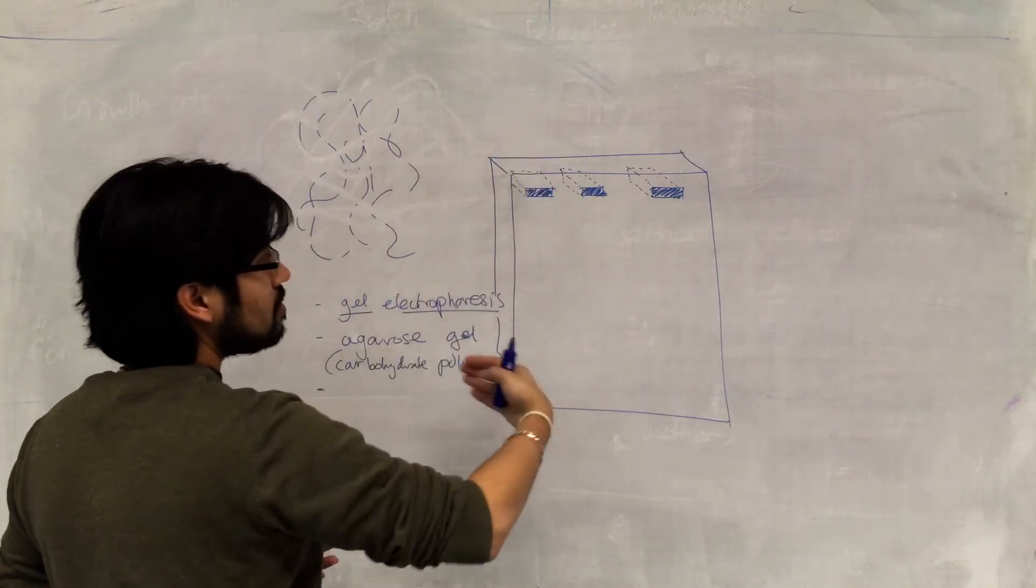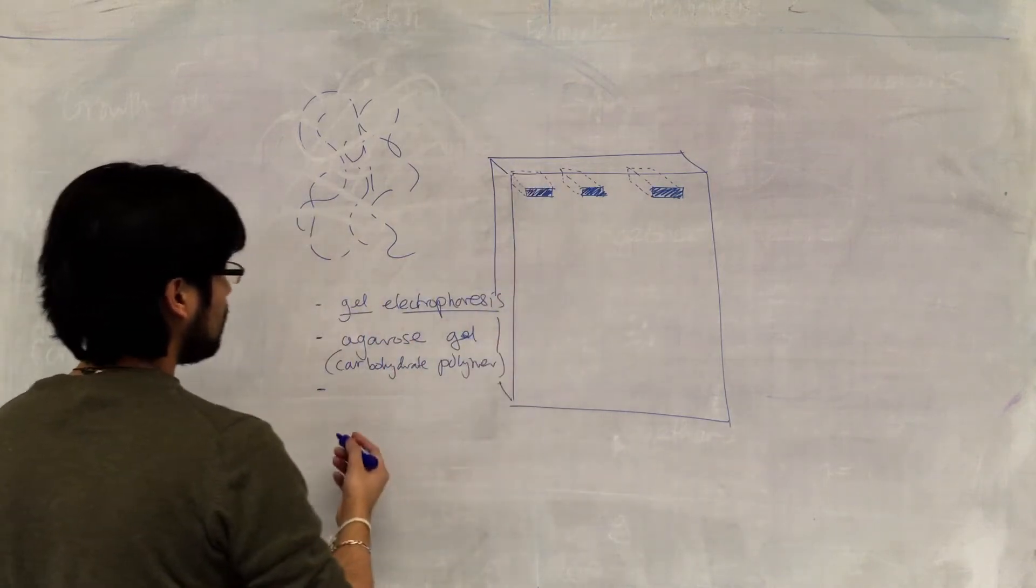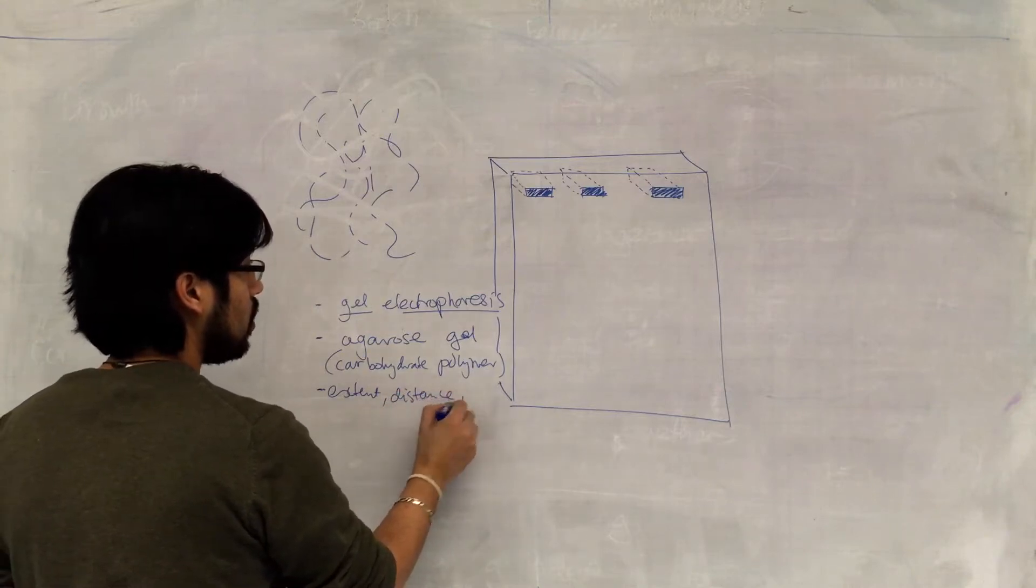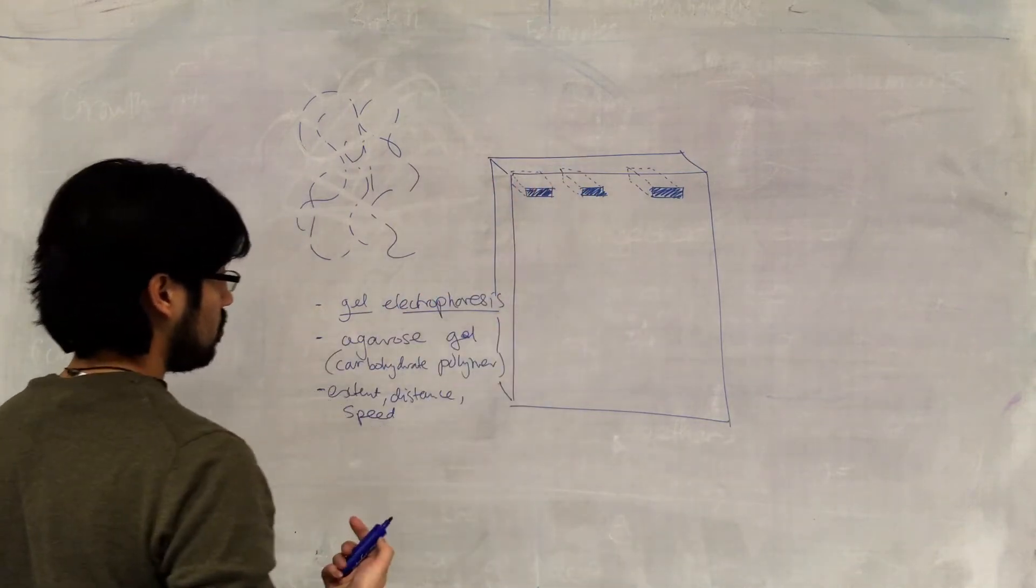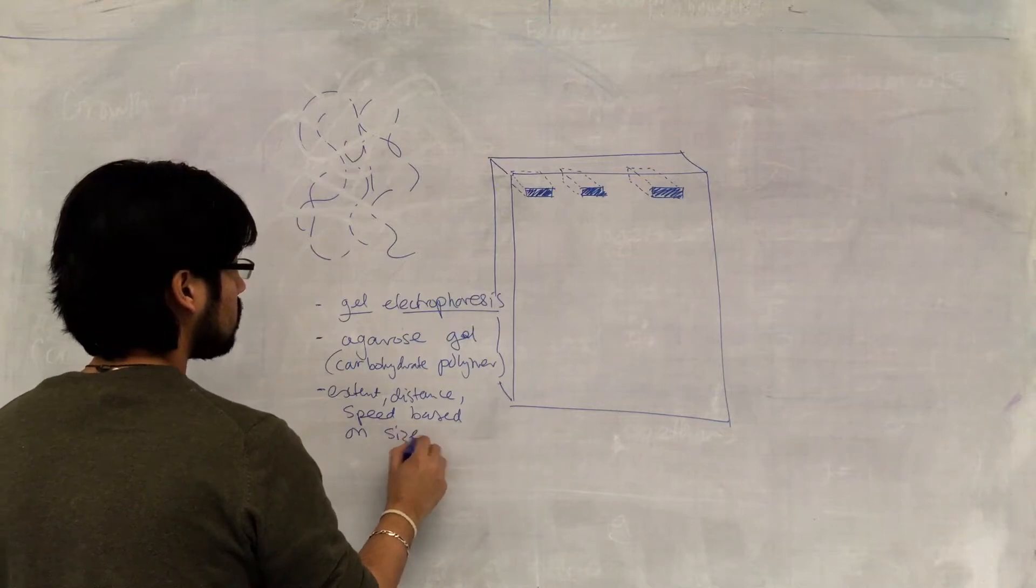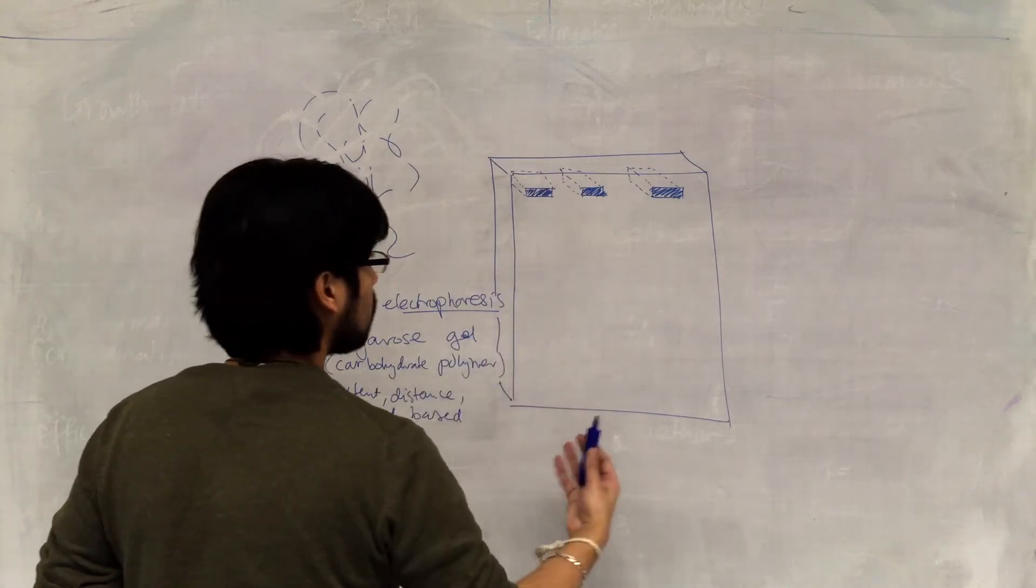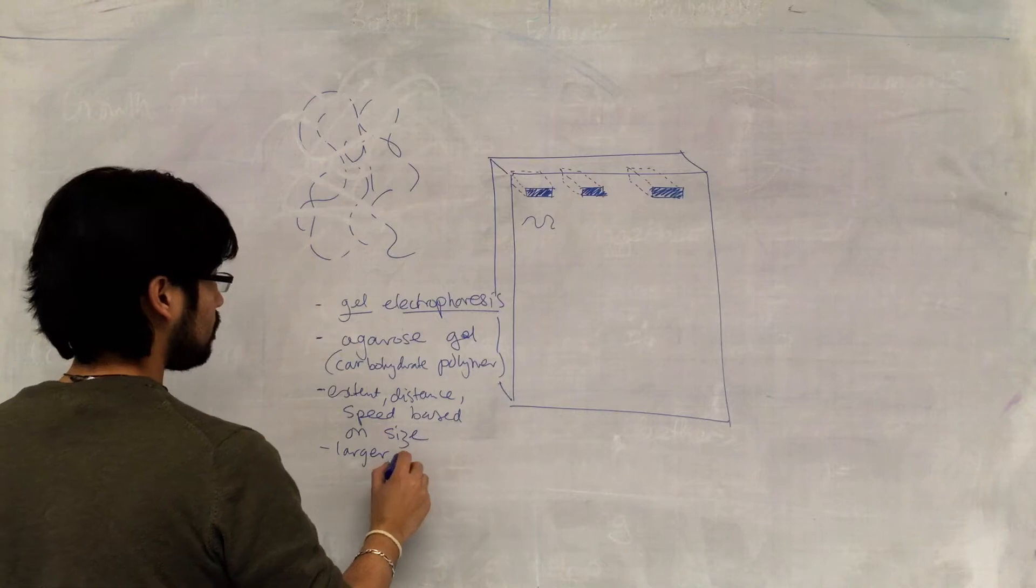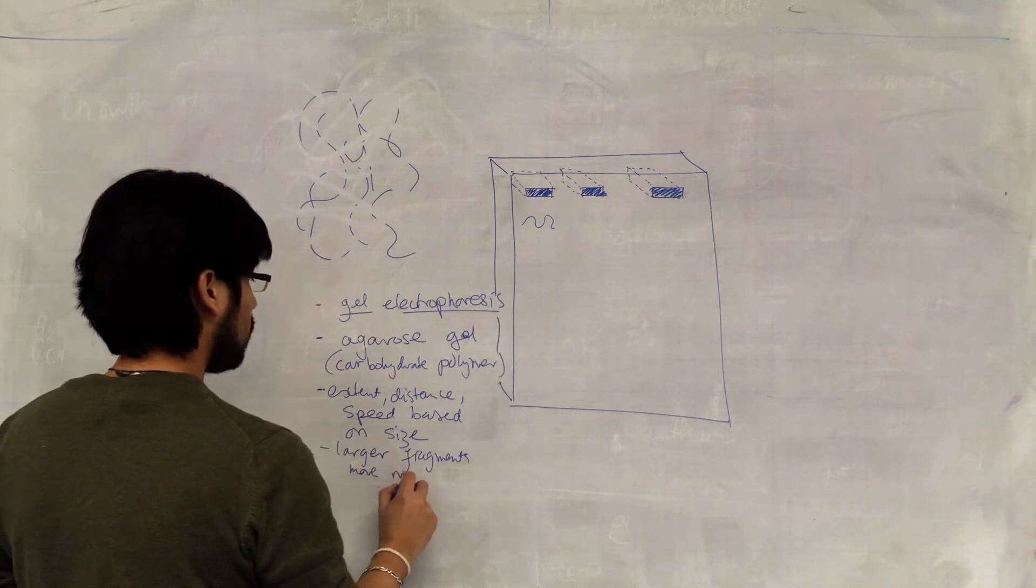And somehow we need to make sure that the movement is based on size. So DNA molecules can move through this gel, but the extent or distance or speed at which those DNA molecules move through this gel is based on the size of DNA fragment. Larger DNA fragments will move more slowly through the gel.